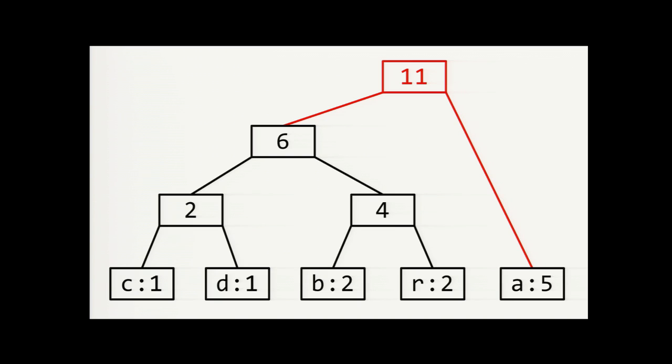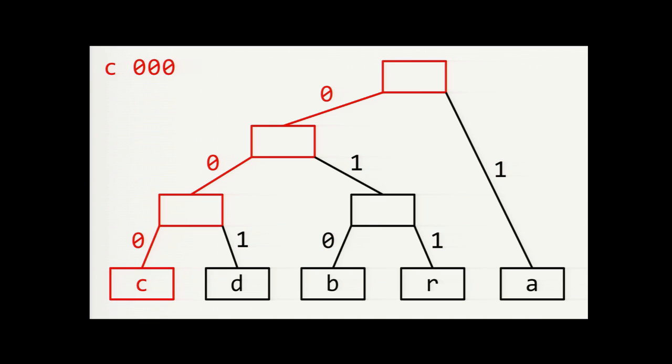Then we label the links in this binary tree in the standard way. The left child is zero and the right child is one. Then we just trace down from the root to each leaf node to get the code for each symbol. So the code for C is zero, zero, zero. D is zero, zero, one. B is zero, one, zero. R is zero, one, one. And A is just one. So note that no code is a prefix of any other code. And that's an important property that allows us to have a compact encoding.